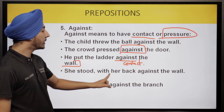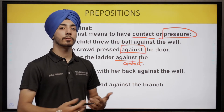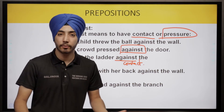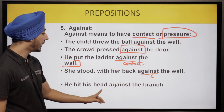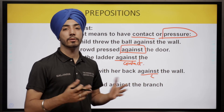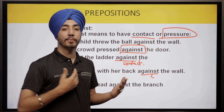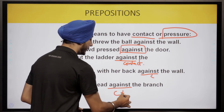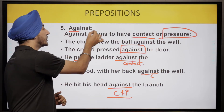'She stood with her back against the wall' — she was in contact with the wall, not pressing it, so it shows contact here. 'He hit his head against the branch' — this shows both contact and pressure, since hitting involves a certain amount of force. So 'against' can show contact, pressure, or both, depending on the context.